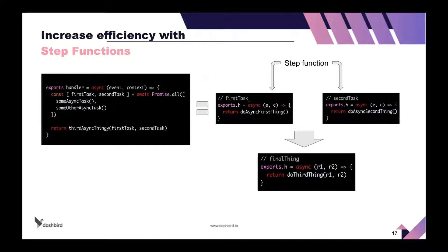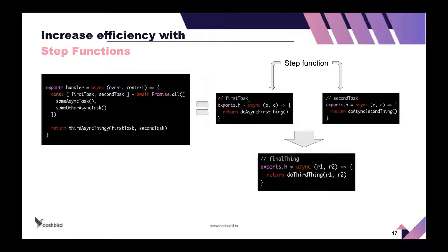The other thing is orchestration. Use Step Functions and don't wait in code when you do a long-running task and then wait for another long-running task. Use Step Functions and orchestration — it's a lot better that way. You can also replace some functionality with managed services. You don't always need to do everything yourself in the code, and this is one of the best boosts we've seen customers getting.